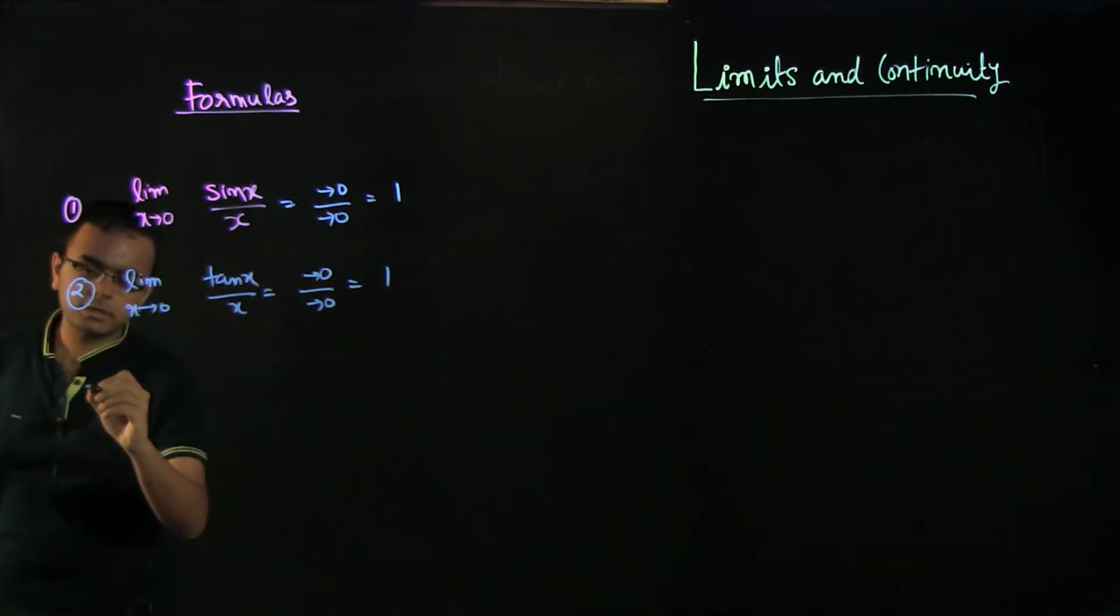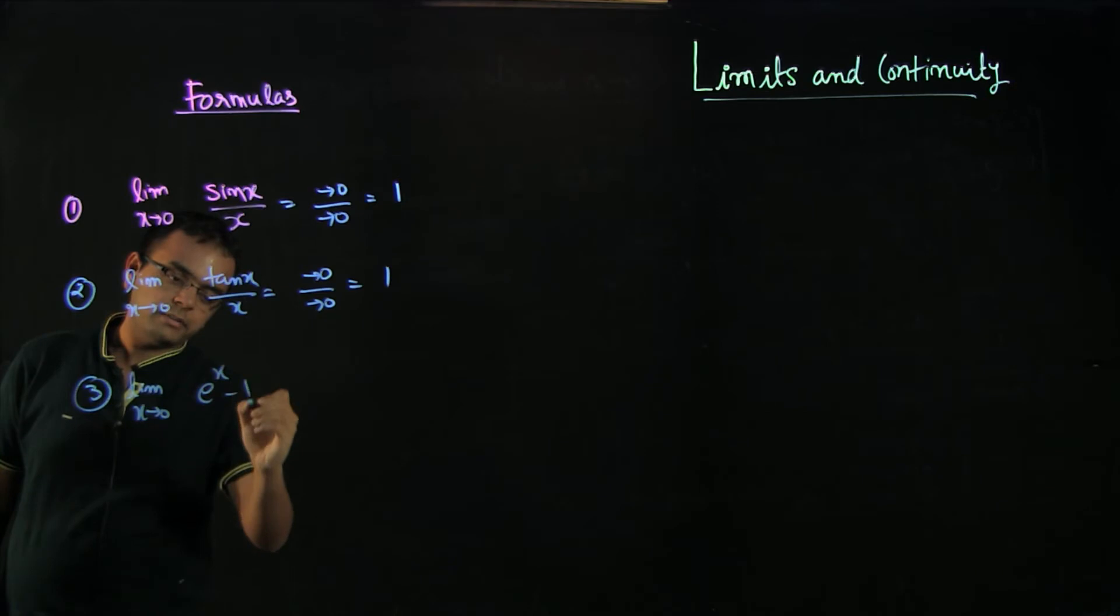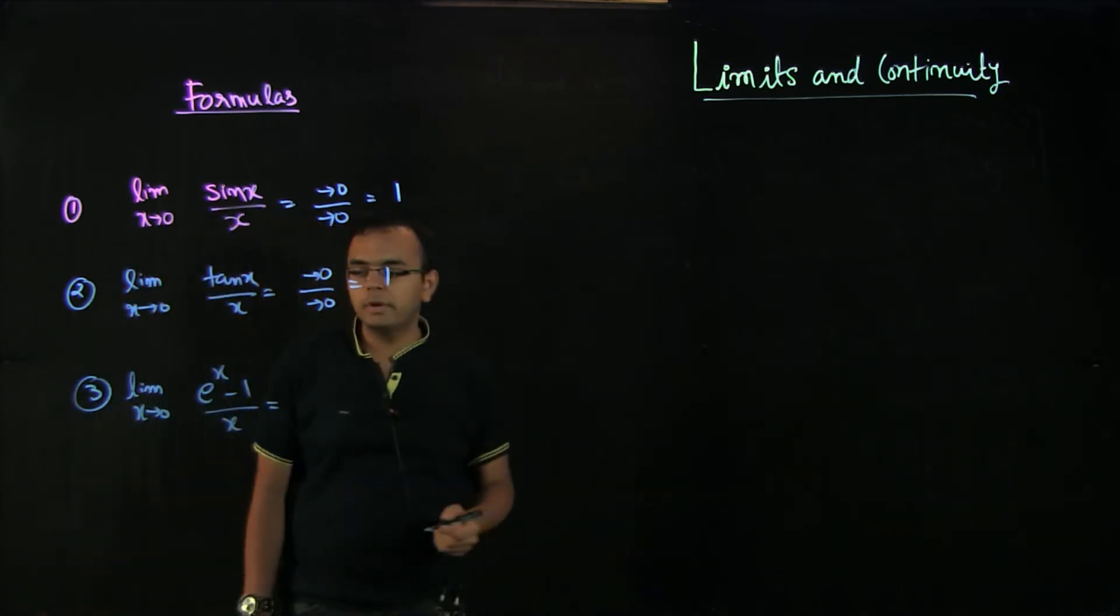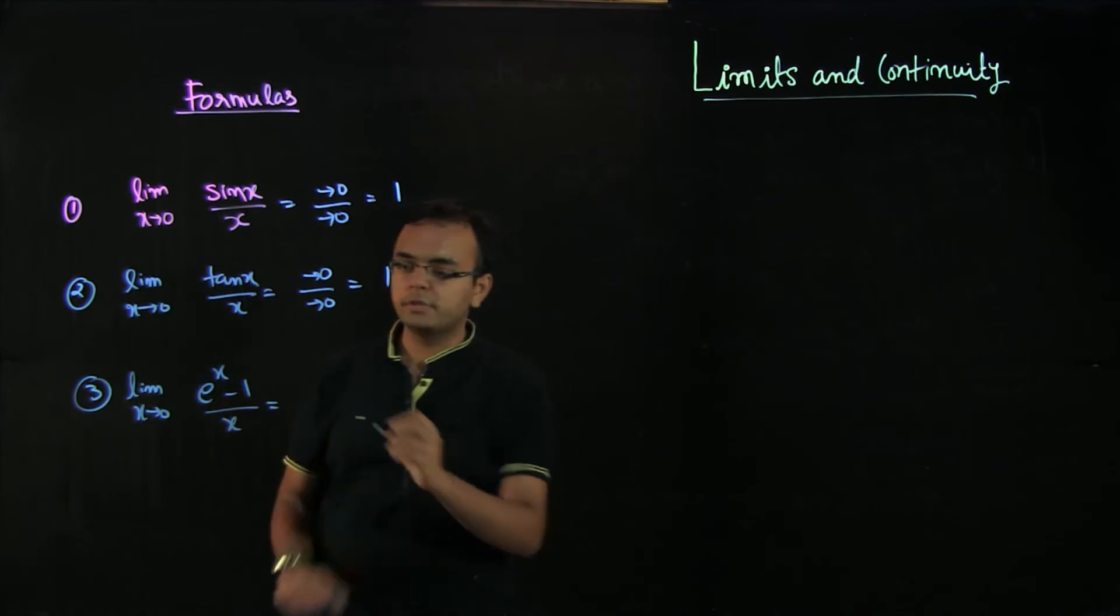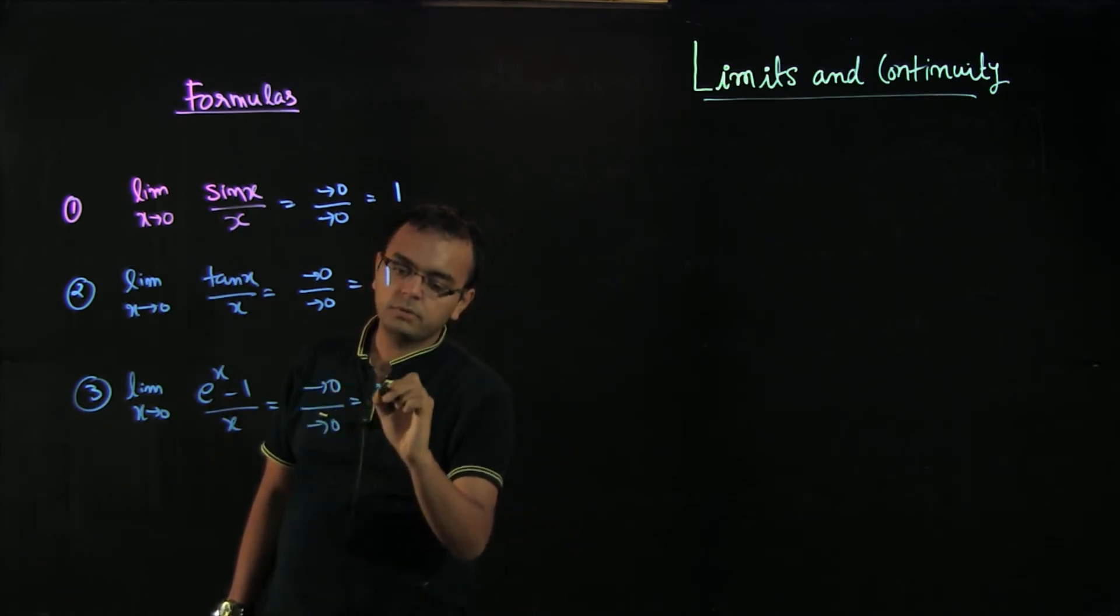The third formula is limit x tends to 0 of e raised to the power of x minus 1 by x. If you put x equals 0, again 1 minus 1 is approaching 0 by approaching 0, and this is also equal to 1.